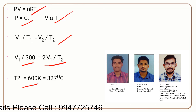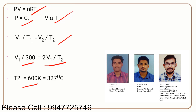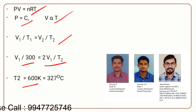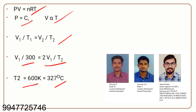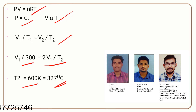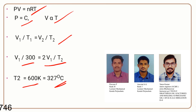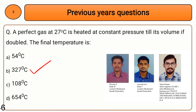Converting back to Celsius: 600 minus 273 equals 327 degrees Celsius. The final answer is 327°C, which is option B.